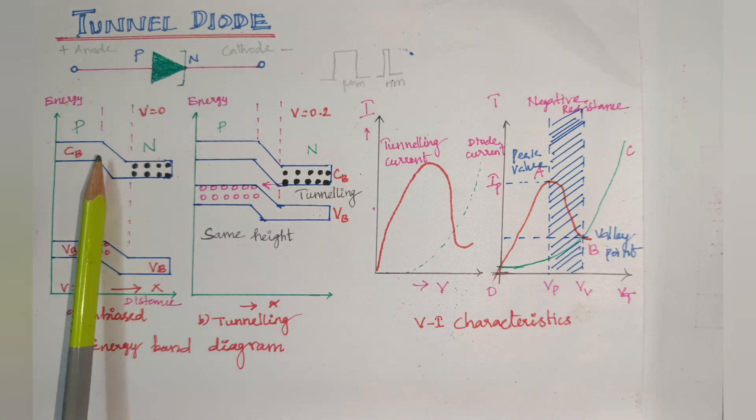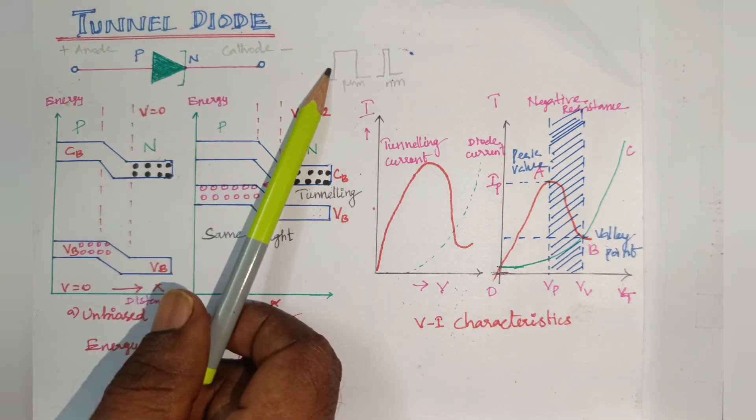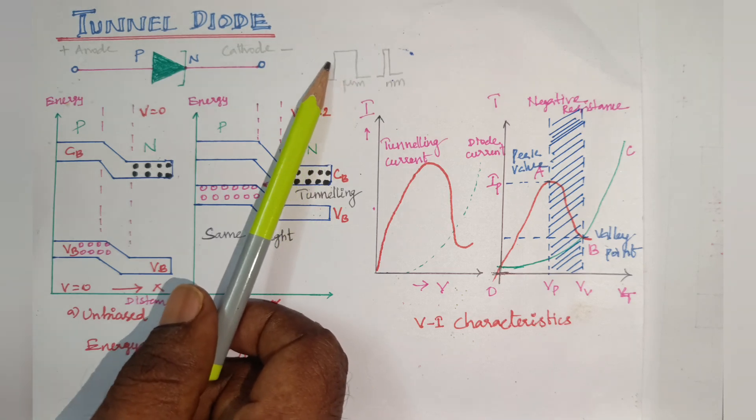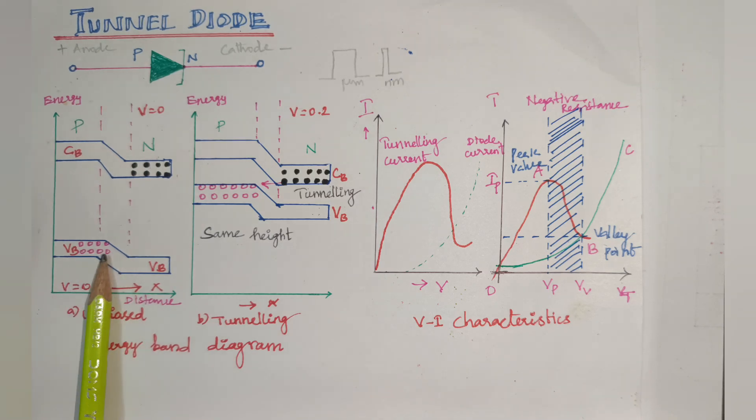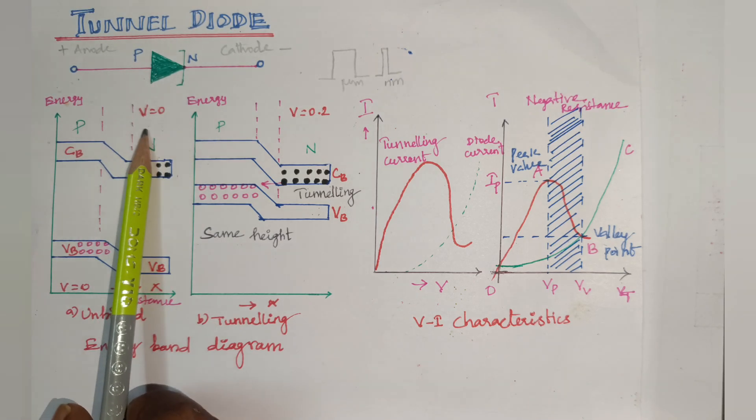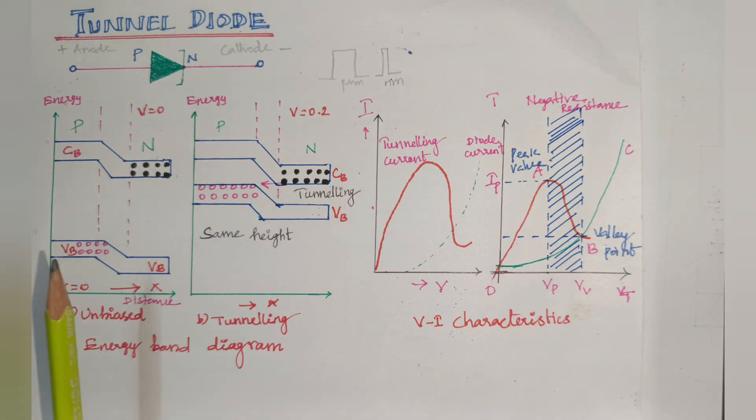Working: The operation of the tunnel diode depends on the tunneling effect. Electrons penetrate the potential barrier. The energy band diagram shows this is unbiased, so V equals zero. There is a large mismatch between valence band and conduction band, but the distance is very narrow.